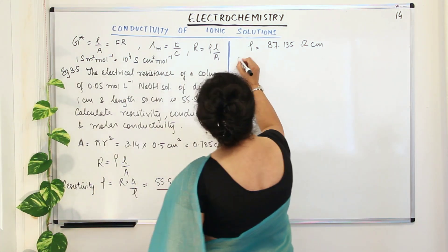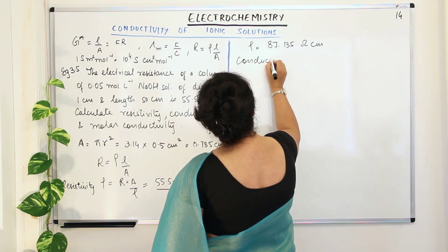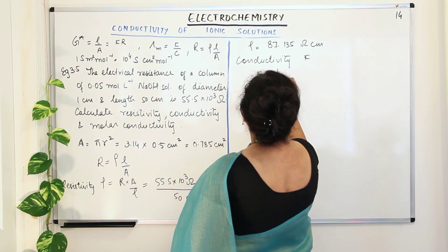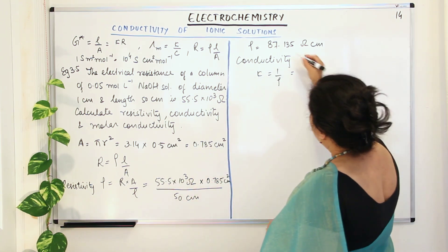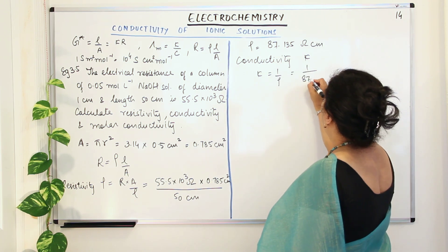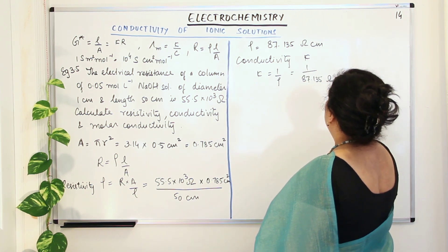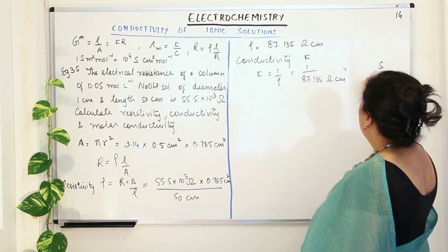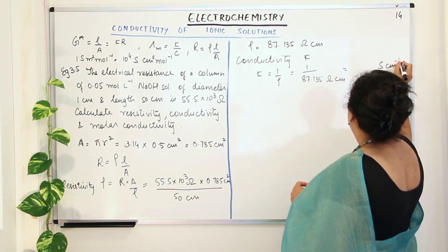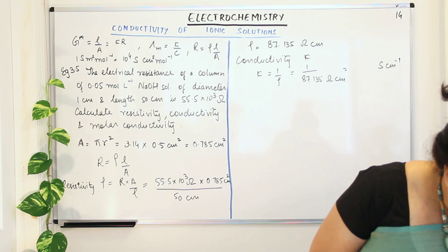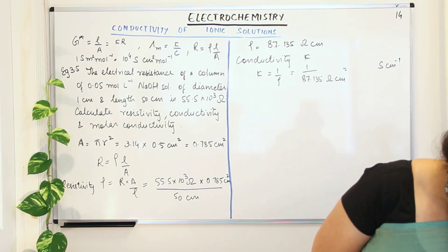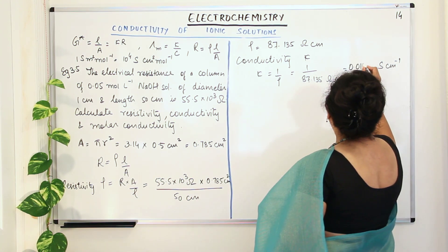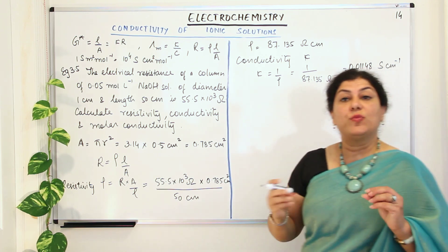The next step is to find conductivity kappa = 1/rho = 1 / 87.135 ohm·cm = 0.01148 Siemens per centimeter.